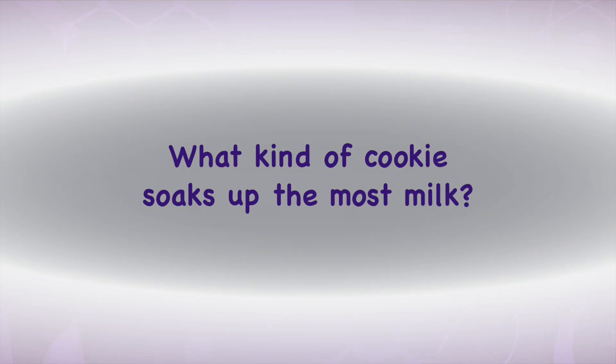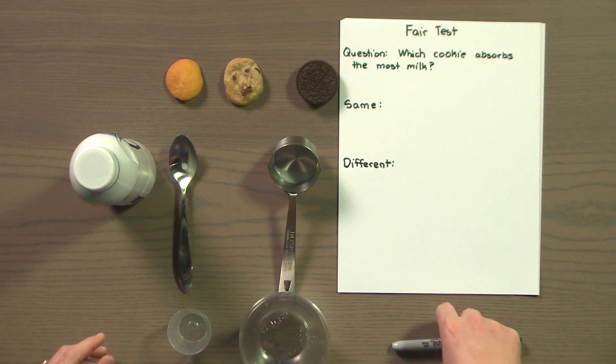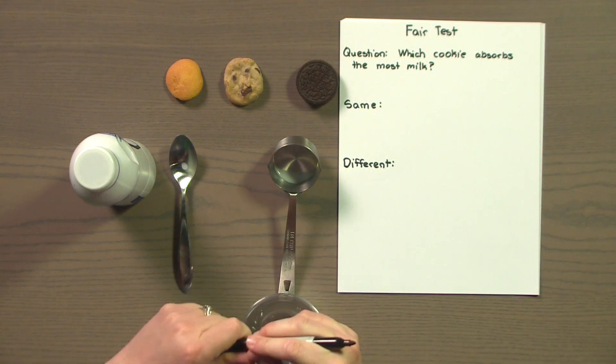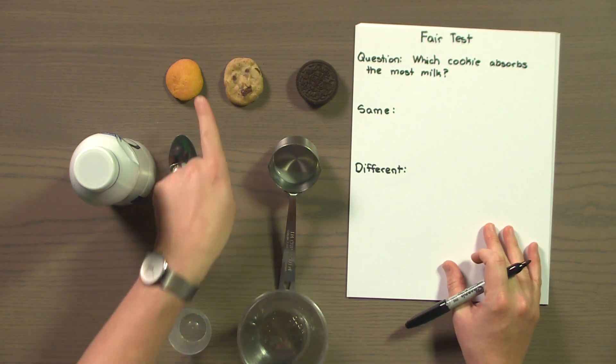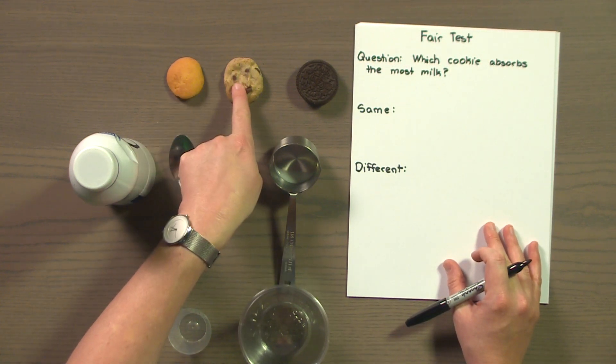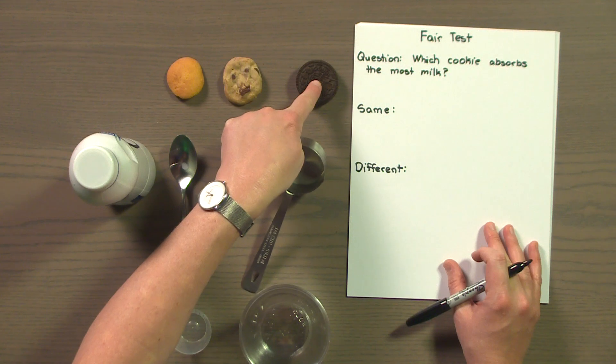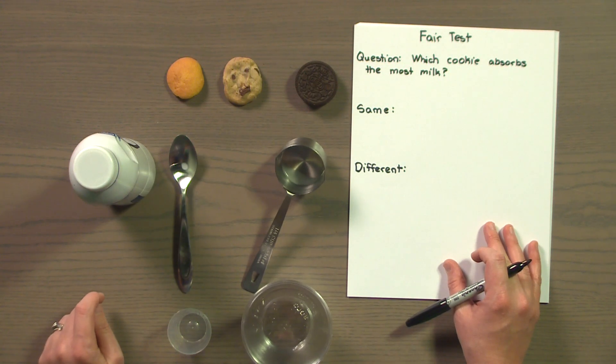We'll start with what's going to be changed or different and I'm going to write it here on my plan. So here I have a Nilla wafer, a chocolate chip cookie, and an Oreo. This is what's going to be different.